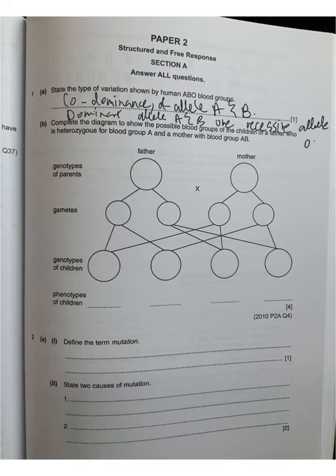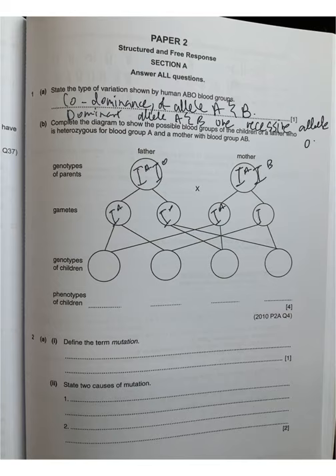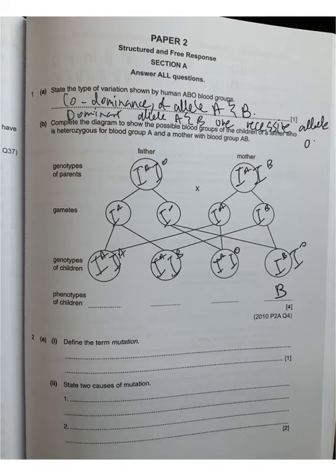Complete the diagram: the father is heterozygous for blood group A, genotype I^A I^O, and the mother is blood group AB, genotype I^A I^B. The gametes are I^A and I^O for the father, and I^A and I^B for the mother. Crossing gives I^A I^A, I^A I^B, I^A I^O, and I^B I^O — blood groups A, AB, A, and B.